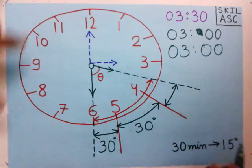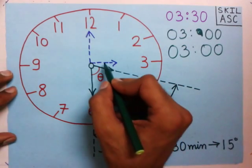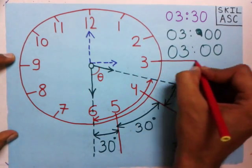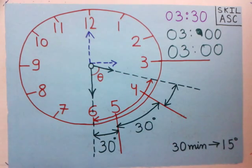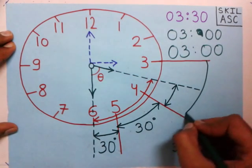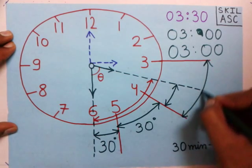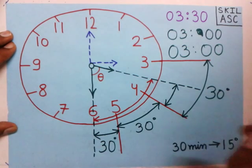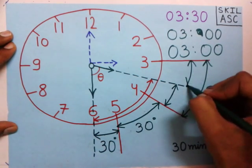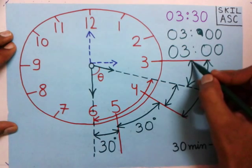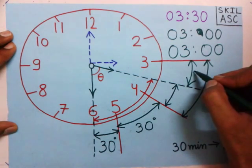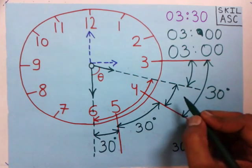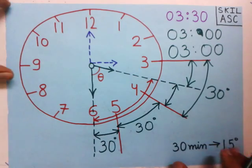Now we have to find this angle. We extend these points. If you observe, this is a gap between 3 and 4, so it is again a 30 degree angle. Now, to find the remaining part of this third angle, we will find that angle and then subtract it from 30. To find this inner angle, we again learn a new concept.